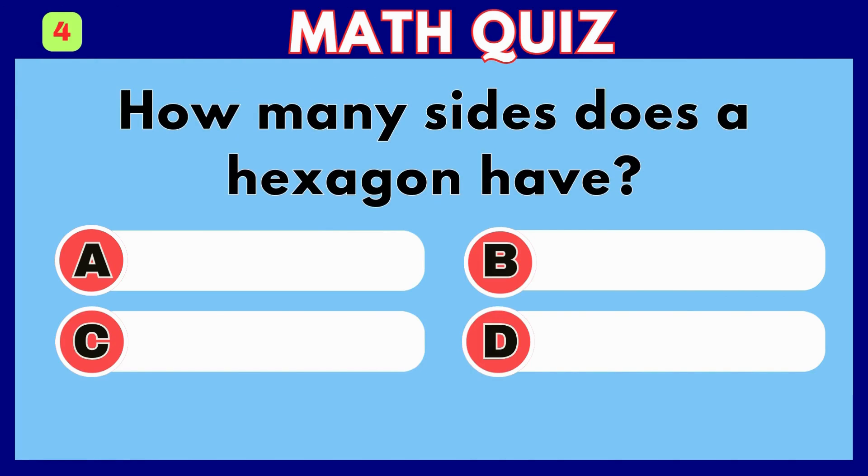How many sides does a hexagon have? Answer C, 6.